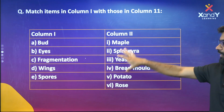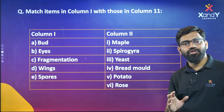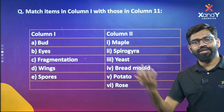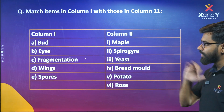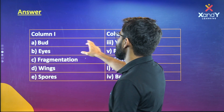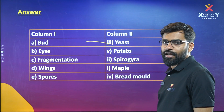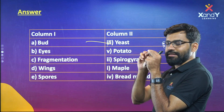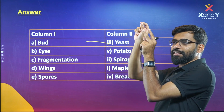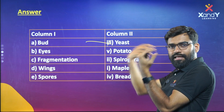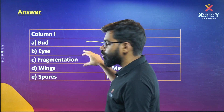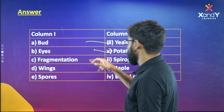So what is the answer? Budding occurs in Yeast. When you have a bud in Yeast, you have a chain of buds. We have a figure in the textbook. Eyes of the Potato — that is Vegetative Propagation.